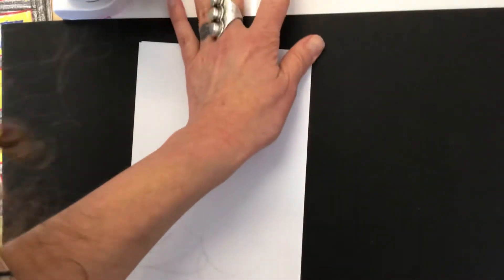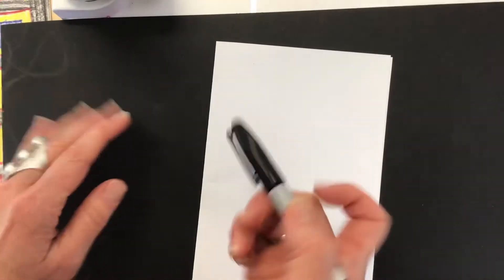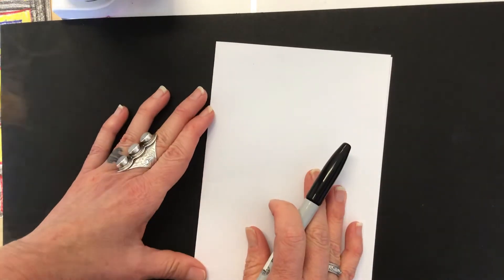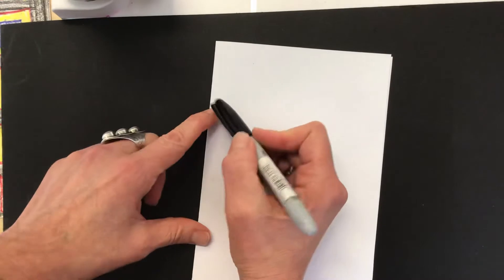Now, I have my folded piece of paper, and I'm going to practice making my half a heart shape. I'm going to use a marker so that it will show up so you can see it best, but I would recommend using a pencil so that if you need to erase, you may.